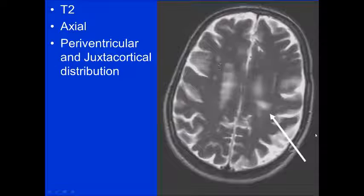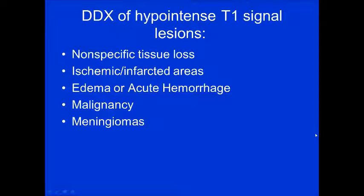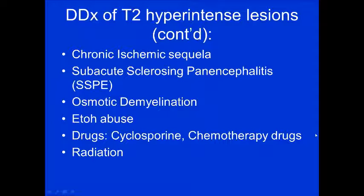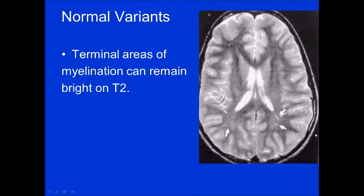What else can look like MS on MRI? The differential for hypointense T1 signal lesions includes non-specific tissue loss, ischemia or infarction, edema, acute hemorrhage, malignancy, or even meningioma. The differential for T2 hyperintense lesions is extensive: migraine sequela, normal variants including Virchow-Robin spaces, MS, Lyme disease, HIV, PML, neurosarcoid, ADEM, vasculitides, diffuse axonal injury, hypertensive sequela, diabetes, cerebral edema, chronic ischemia, SSPE, osmotic demyelination, alcohol abuse, drugs, and post-radiation — just because you have T2 hyperintensity does not make it MS.